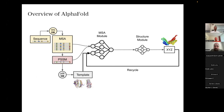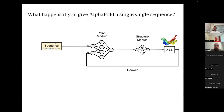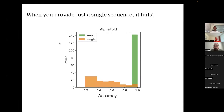One thing that we saw pretty early on, and others have seen as well, is that as soon as you remove the MSA information and just give AlphaFold a single sequence, it doesn't do so well. This is showing the distribution of TM scores: if you use a multiple sequence alignment, you get really good predictions, but as soon as you remove the MSA, AlphaFold performs really poorly.